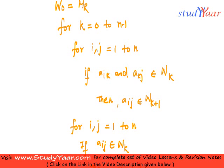If a_ik and a_kj are present in Wk, then create Wk+1 as follows. Then you add a_ij in Wk+1.